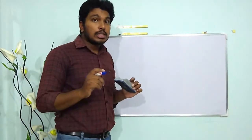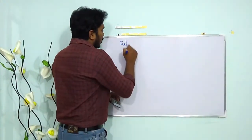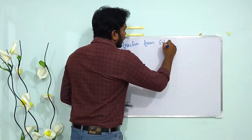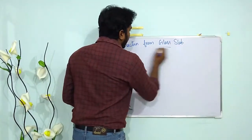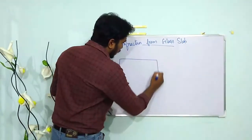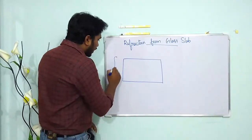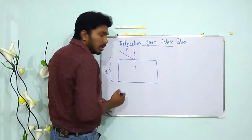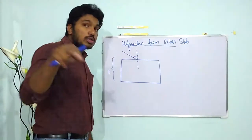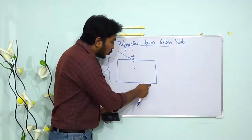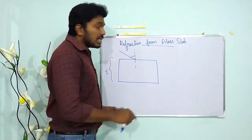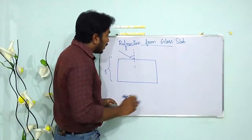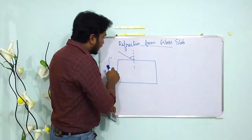In today's class we are going to learn about refraction from a glass slab. Let me consider a glass slab of thickness t. When light is incident on it, it undergoes two refractions — one at the first interface and one at the second interface. This glass slab has two parallel refracting surfaces.